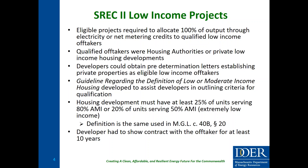The basic qualification criteria was that the housing development had to have at least 25% of their units serving a population at 80% of the area median income, or 20% of their units serving a population at 50% of the area median income — also known as extremely low-income. This is the same definition used in our affordable housing statute, also known as 40B — specifically MGL Chapter 40B Section 20 — based on the recommendation of the Department of Housing and Community Development and various commenters familiar with the low-income housing development sector.